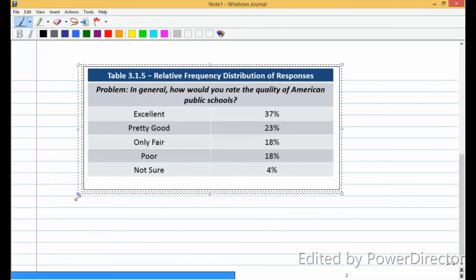You can see these classes. This tells you, it says, in general, how would you rate the quality of American public schools? So these classes don't actually have numbers. They're just the ratings that were used. And then someone took all of the raw data from this survey and they converted over. Instead of telling you how many people thought that it was excellent, pretty good, fair, poor, or not sure, they converted this to a percentage.